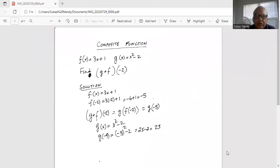f of x is given function of x as 3x plus 1. g of x, which is another function of x, is given as x square minus 2. Find g composite with f of minus 2.